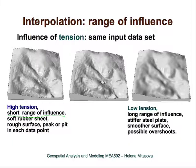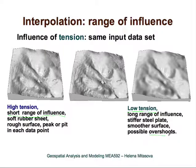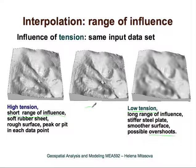This surface is interpolated with very low tension, meaning the plate is much stiffer and the influence of each data point has a rather long range, so the resulting surface is much smoother. But if we are interpolating with low tension and trying to pass through each data point, we can get overshoots. That's why low tension is usually coupled with some smoothing to avoid overshoots. With high tension we get a rough surface; with low tension we get a smooth surface; and usually the best solution is somewhere in between.